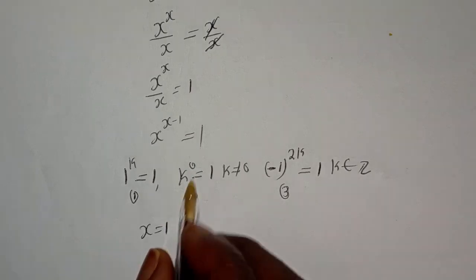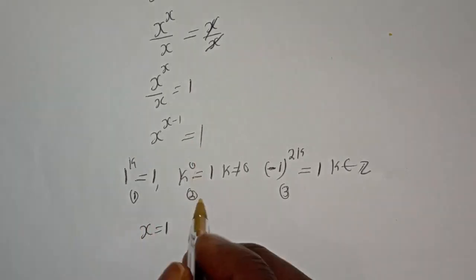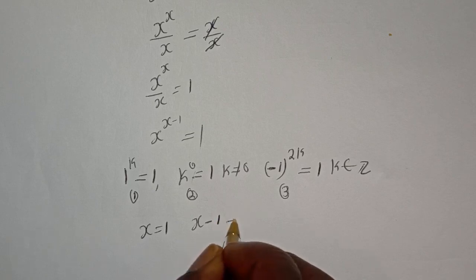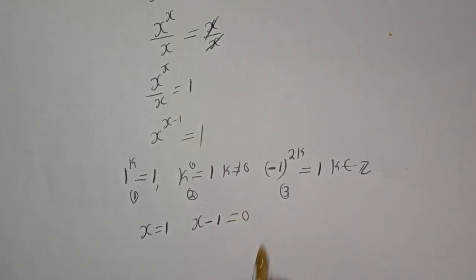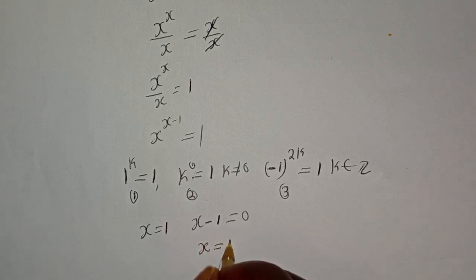Now, let's consider this rule. From here, x minus 1 is equal to 0. Therefore, x is equal to 1.